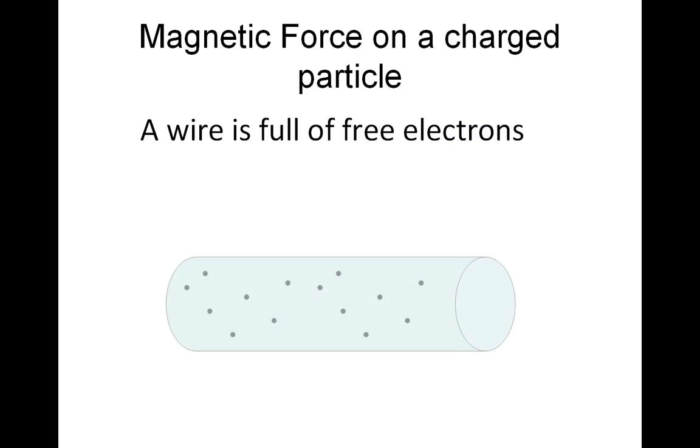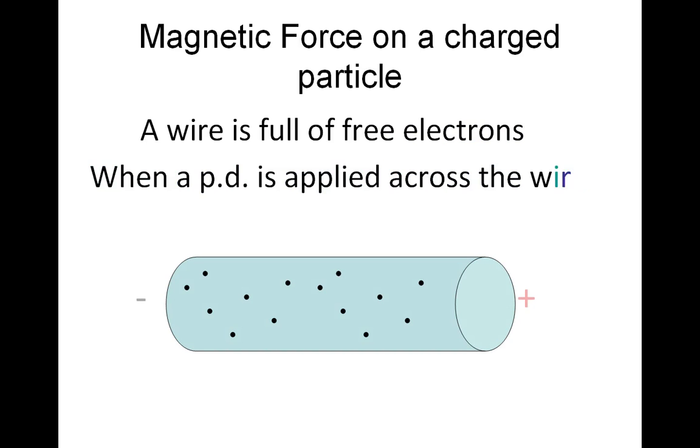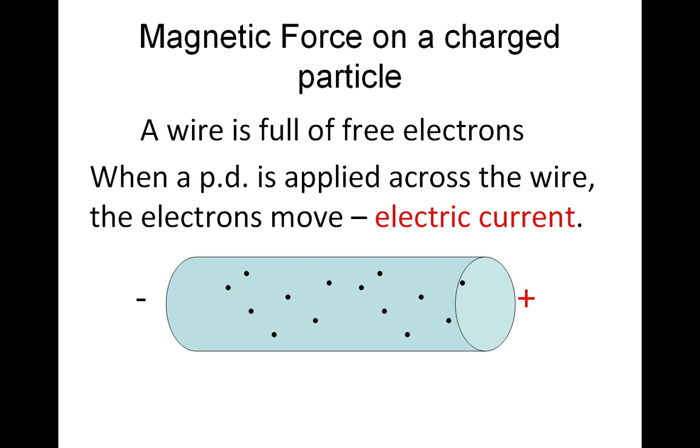If we look at a single electron, our wire is full of electrons. When we apply a potential difference, all of the electrons move together, and that's what we've got as an electric current.